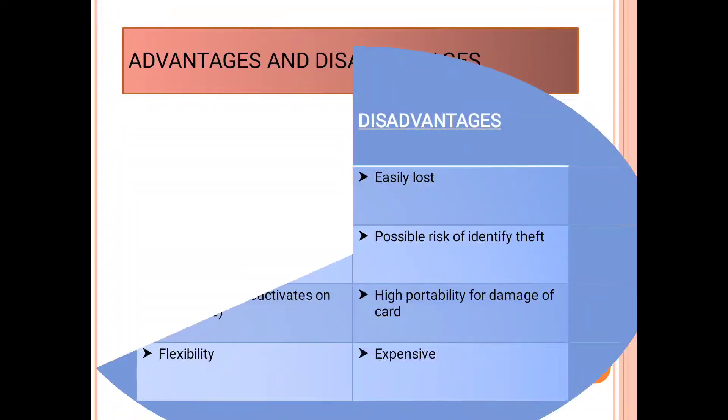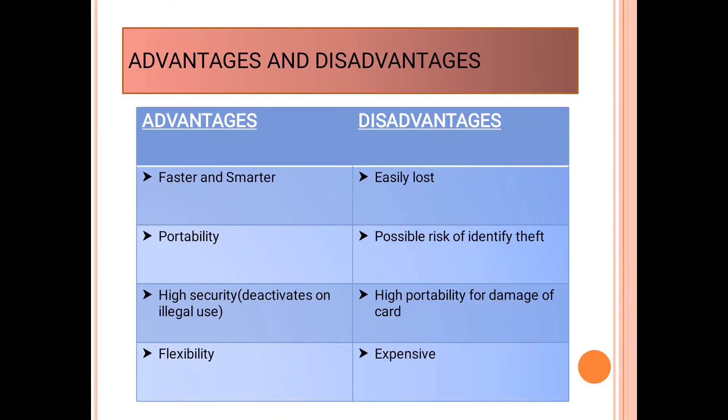At last are the advantages and disadvantages of smart card. The advantages are that it is faster and smarter. It is portable, we can carry smart card anywhere. It has high security, as it deactivates on illegal use. It is flexible, as there is no need to carry separate cards. Now, the disadvantages are that it can easily be lost. There is a possible risk of identify theft, because a card cannot recognize its holder. High portability may damage the card. It is expensive.